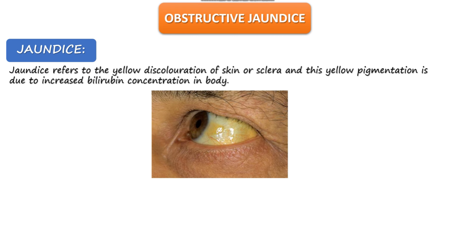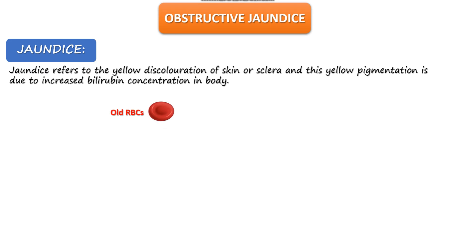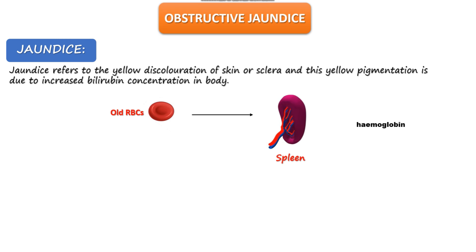Now let's deal with the metabolism of bilirubin. All RBCs that have completed 120 days of their life cycle within the human body have nothing further to do, so they are sent to the spleen, which is an extravascular organ, where they are broken down. This leads to formation of hemoglobin, which further decomposes into two components: heme and globin. The globin forms amino acids which go back into blood circulation, while heme is divided into iron and bilirubin.